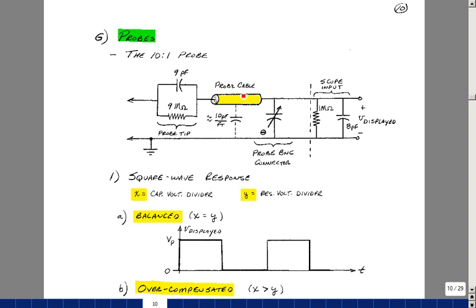In the tip there's actually a 9 megaohm resistor and a 9 picofarad capacitor. The cable itself has some capacitance per foot. And then at the interface to the scope there's a little set screw that you can vary the capacitance. And then what's in parallel here is this capacitance, this capacitance, and then the capacitance of the scope which is around 8 picofarads.